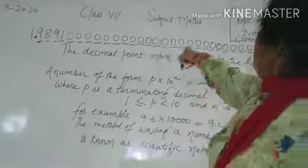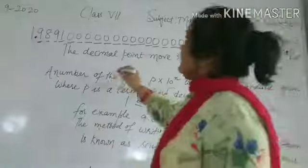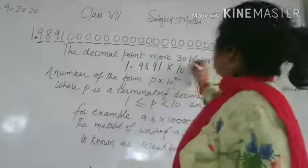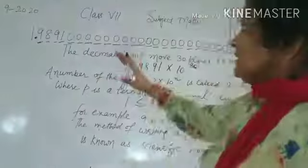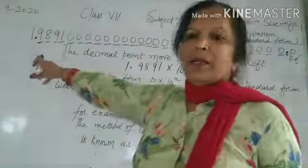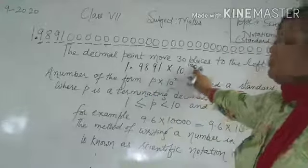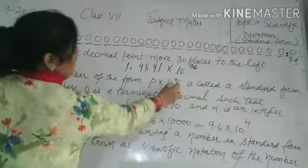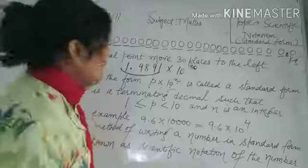After 30 places, the decimal point is moved 30 places to the left. That number will be written as 1.98910 into 10 raised to power 30. This form, p into 10 raised to power n, is called standard form.